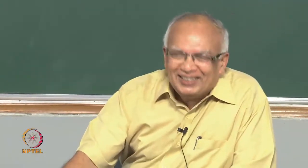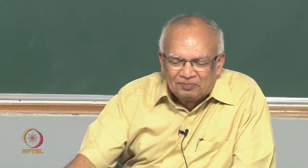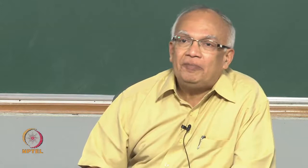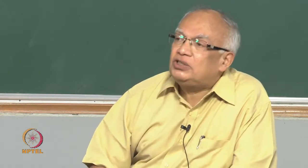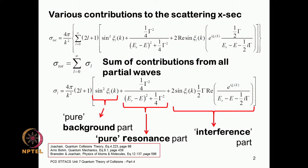Greetings. This is the last unit of this course and there are just a few classes in this. We already got the expression for the Breit-Wigner formula and today we will introduce the Fano parameters which describe the complete expression for the scattering cross-section inclusive of the background and the resonance. Let me quickly recapitulate the result we obtained in the previous class.